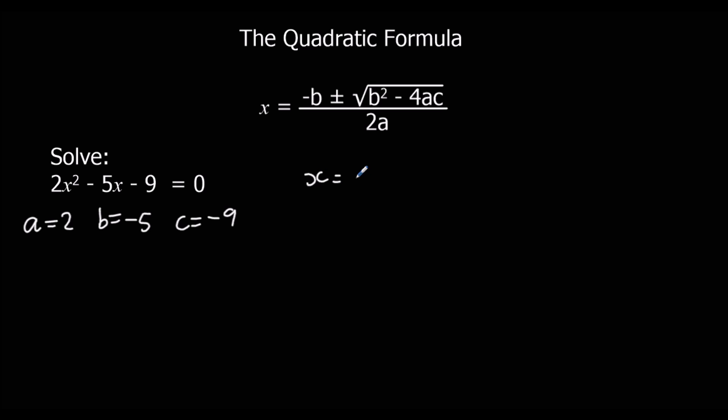And then substitution. So minus minus 5, plus or minus square root of minus 5 squared, minus 4, times 2, times minus 9, all over 2 times 2.